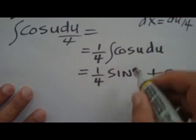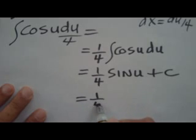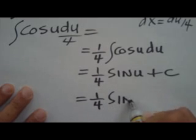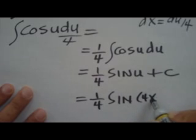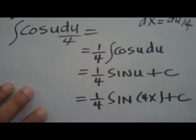So now we substitute back in 4x for u. We have one fourth of the sine 4x plus the constant. And that's our answer.